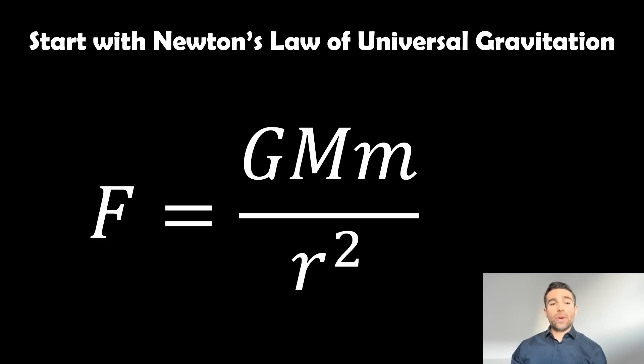So what we're going to do to start with is we're going to start with Newton's law of universal gravitation. This is essentially the gravitational force between two objects, and we can calculate that if we know things like the masses of the objects and the distances between the two objects as well. We start with this equation here to get our surface gravity.